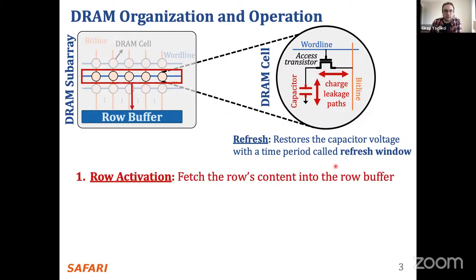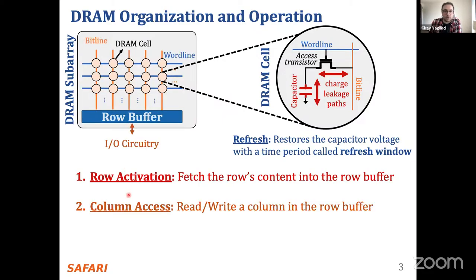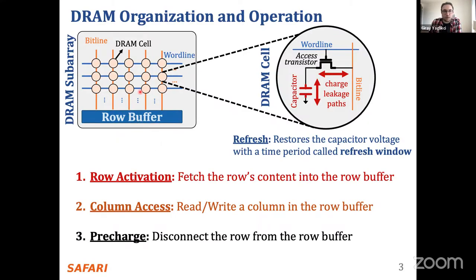To access data, you access it in a DRAM row granularity. You assert the word line, activate all the cells in that row, and they are connected to the row buffer after activation. You perform read and write operations from the row buffer, not directly from the array. Once you're done with that row and want to access another, you need to prepare the subarray for a new row activation by performing an operation called pre-charge, which disconnects the activated row from the row buffer and bit lines, then charges the bit line voltage to a certain level for the next activation.